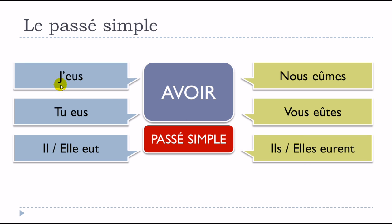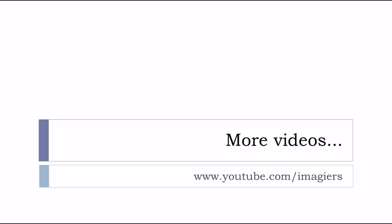So one more time: j'eus, tu eus, il eut, elle eut, nous eûmes, vous eûtes, ils eurent, elles eurent. And that's it — you've got all the forms of the passé simple for the verb avoir. Have a great day, au revoir et à bientôt.